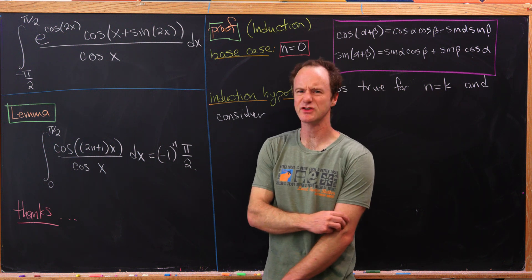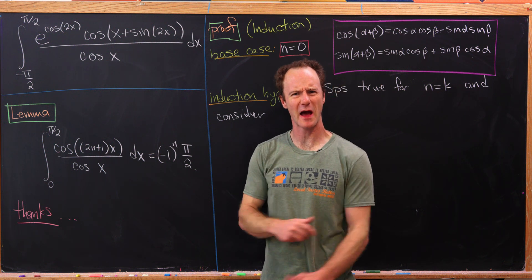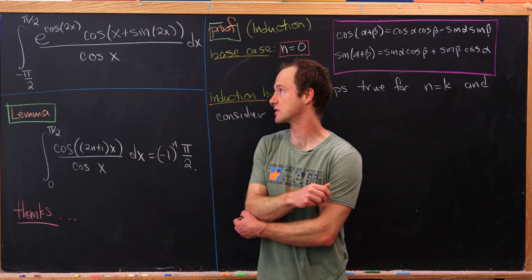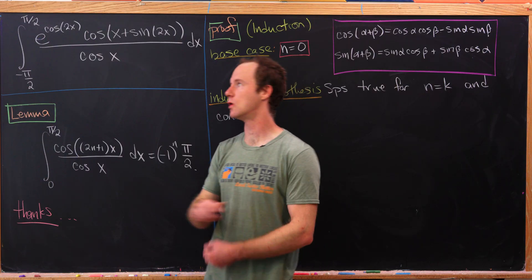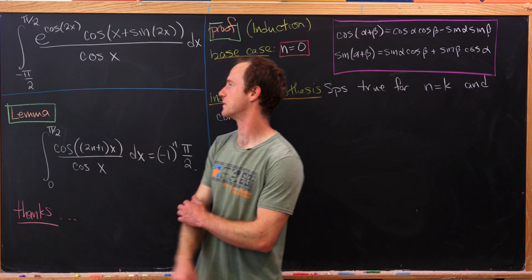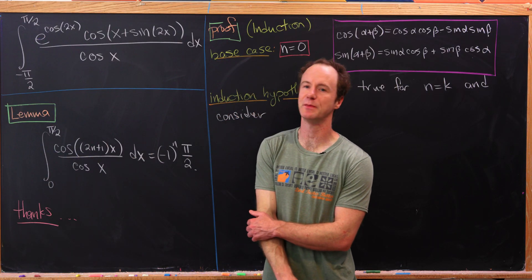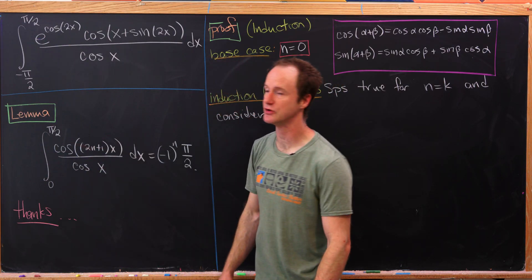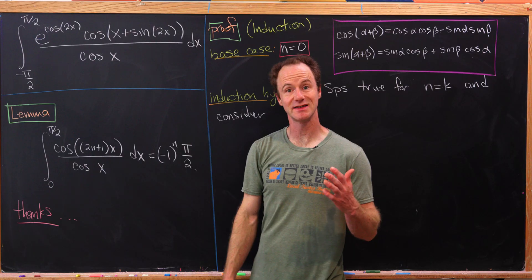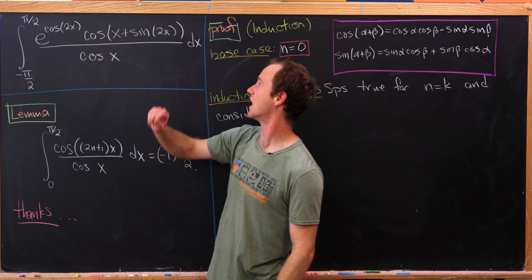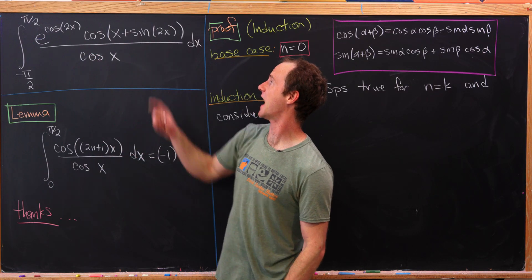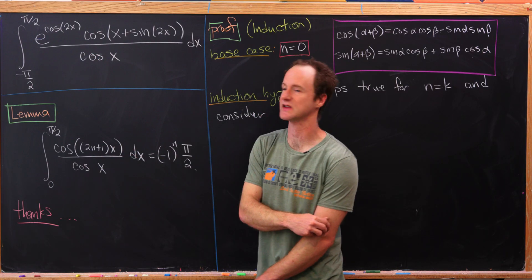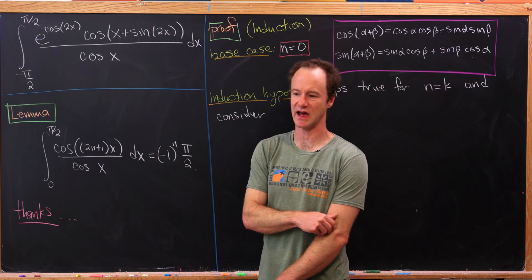Today we've got a really nice integral that's from our favorite problem suggester. Our final goal is the integral from minus pi over 2 to pi over 2 of e to the cosine 2x times cosine of x plus sine 2x, all over cosine x dx.